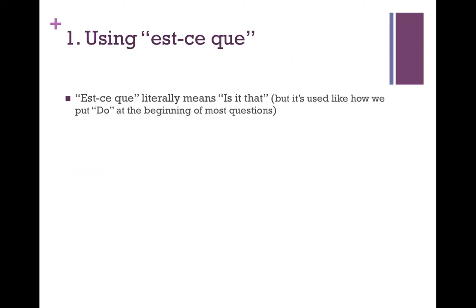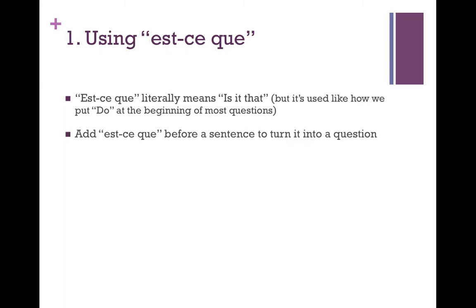The first way to form these questions is called est-ce que. Est-ce que literally means 'is it that?' but it's kind of like how we put 'do' at the beginning of most questions in English. Like if you said 'I dance' and asked 'do you dance?' — that 'do' at the beginning in English is pretty similar to est-ce que in French. Although it doesn't translate the same, it has the same usage. The way you use est-ce que as a question is you just add it before the sentence, and then that sentence becomes a question.